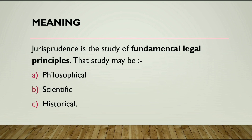Now let us understand the meaning. Jurisprudence is the study of fundamental legal principles — that study may be philosophical, scientific or historical. Jurisprudence is the study of positive law. Positive law means the actual existing law as distinguished from the ideal, or what the law should be. Jurisprudence is the study of positive law, which means it is concerned with both the normative and not merely the positive — it is concerned not merely with the actual but also with the ideal.